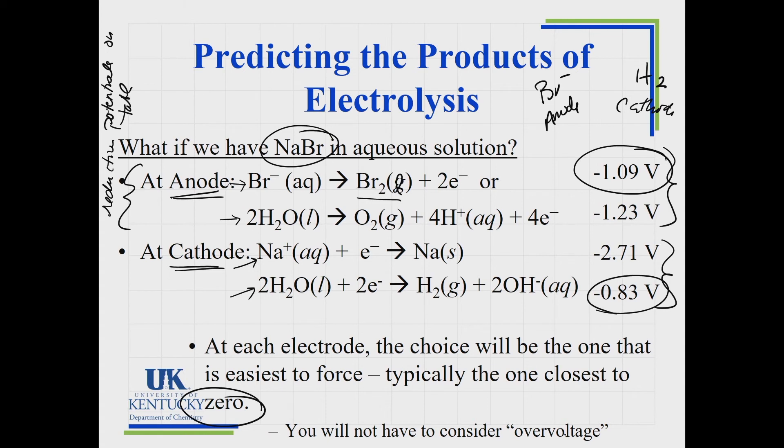Now there is a little funky thing. If you're watching videos or reading in the textbook, you might read something about overvoltage. Overvoltage is a complicating factor that will allow sometimes things that are close, you don't get what's predicted. And we are not going to discuss overvoltage. So if you run across this, you can be happy that we're not going to cover that. So this is all of this lesson and all we have to talk about in terms of the process of electrolysis.